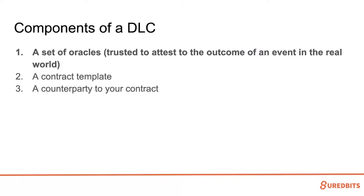Here are the components of a DLC — there are three. The very first thing you need is an Oracle to attest to the thing you're interested in. If Roman and I want to bet on something very obscure that not a lot of people know about, we need to go and source an Oracle somewhere. Maybe we end up paying an Oracle to go attest to this really obscure thing because it's not a piece of information easily obtained from ESPN.com or a Bitcoin exchange. The other thing is a contract template.